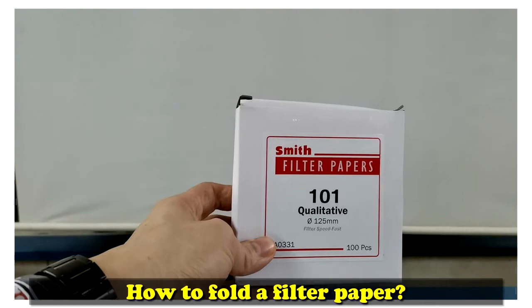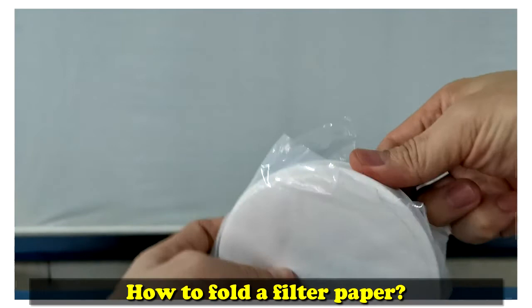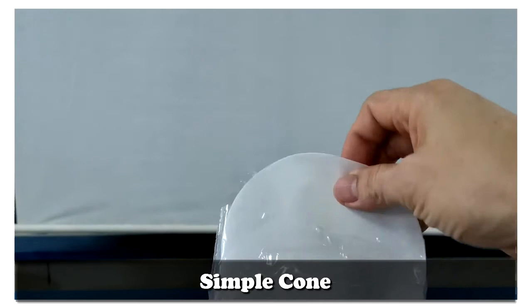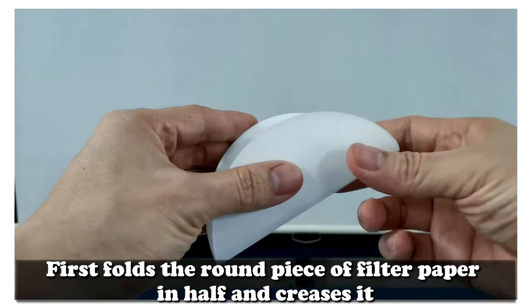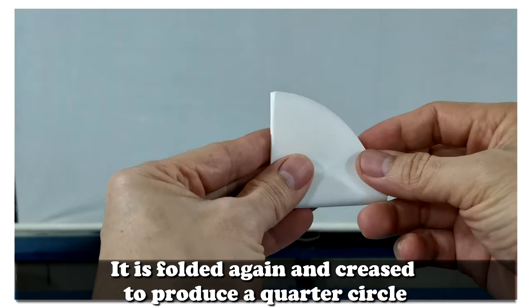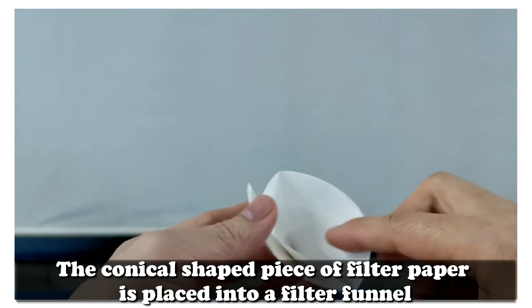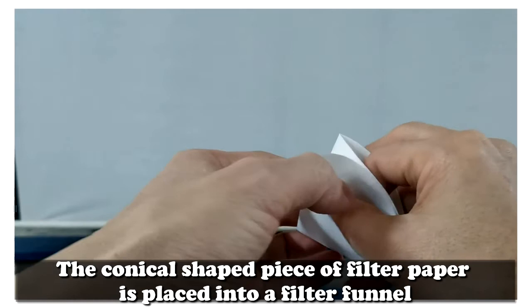How to fold a filter paper? Simple cone. First, fold the round piece of filter paper in half and crease it. It is folded again and creased to produce a quarter circle. The conical shaped piece of filter paper is placed into a filter funnel.